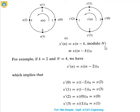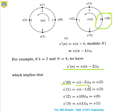x'(n) is actually the reflection of x(n-k) mod N, written as x((n-k))_N. The relation is x'(n) = x((n-2) mod 4). To derive x'(0): x'(0) = x((-2) mod 4) = x(2) = 3. Since n=0, we get x(-2), and -2 mod 4 = 2, so x'(0) equals x(2) which is 3.